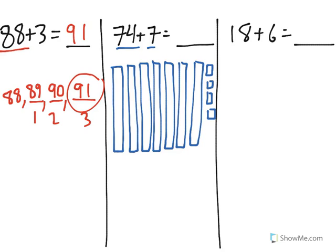So I need to start with 74 and add seven more. I have 1, 2, 3, 4, 5, 6, 7. Now as you can see,